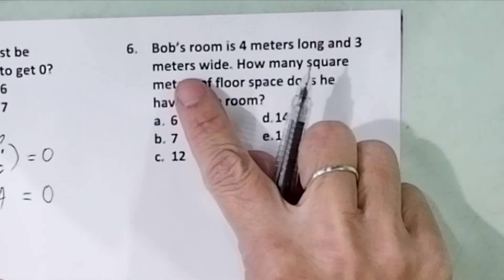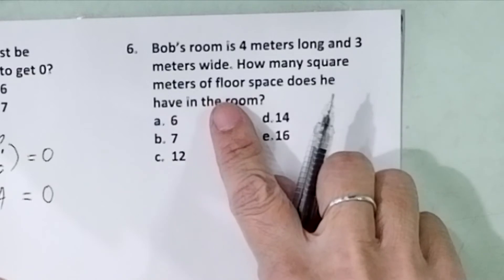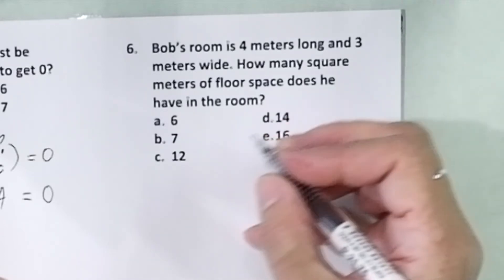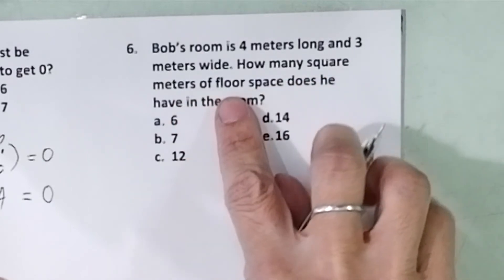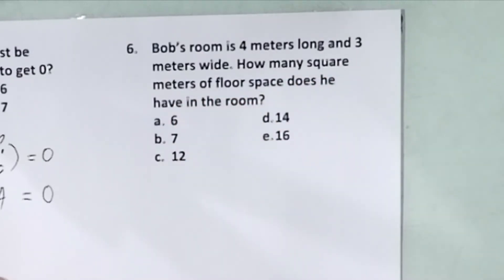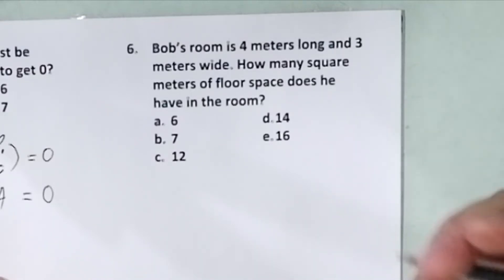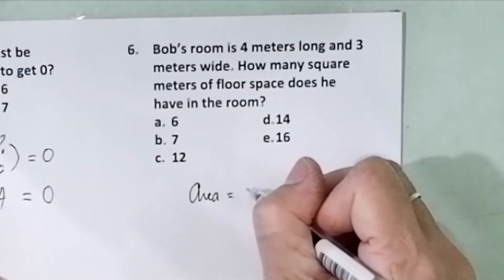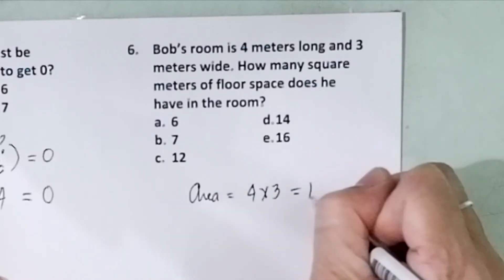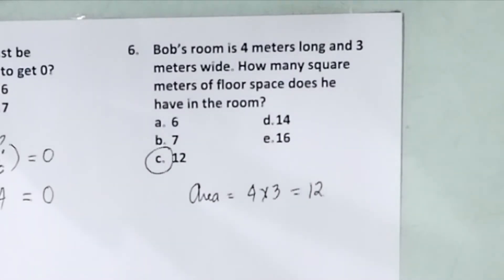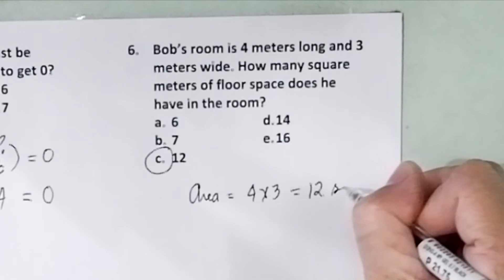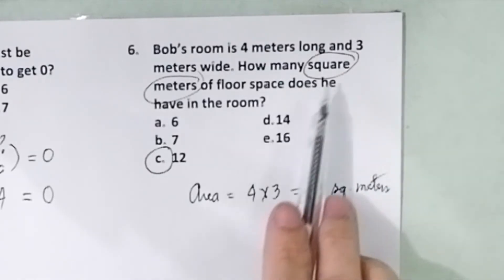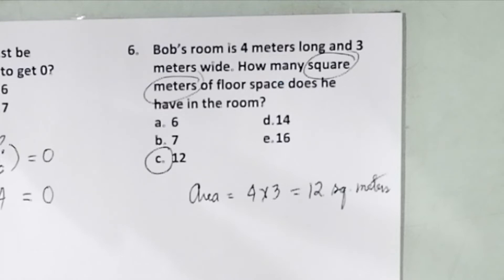Problem number 6. Bob's room is 4 meters long and 3 meters wide. How many square meters of floor space does he have in the room? This is a simple area problem. When you see 'how many square meters,' you are being asked for the area. The area is 4 times 3, which equals 12 square meters. If you see 'square meters,' that gives you a hint that the problem is asking for area.